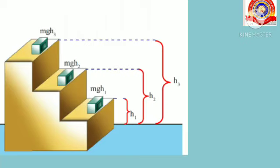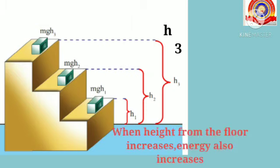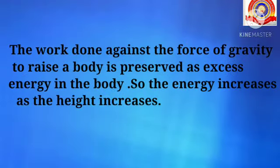Here you can see three different heights of an object having mass m. The heights are h1, h2, and h3. Can you say at which height from the floor is maximum work done on the body? Yes, it is at h3. When height from the floor increases, energy also increases. The work done against the force of gravity to raise a body is preserved as excess energy in the body, so energy increases as the height increases.